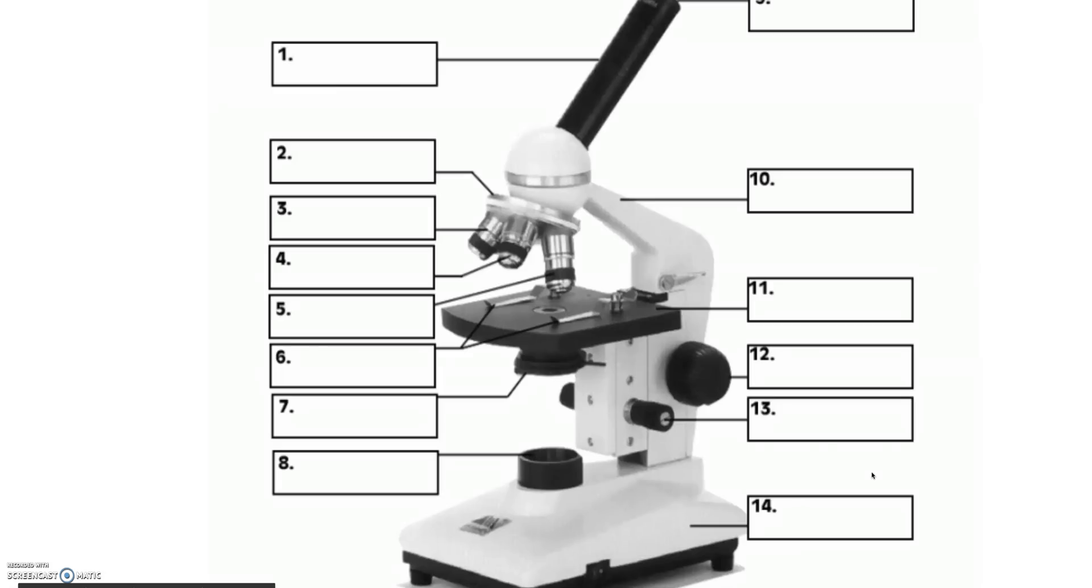This is the base. If you come across a question of how do you properly hold a microscope, you hold the microscope with one hand on arm and another hand under the base. The stage clips are to secure the slide. These are the objective lens. The smallest magnification is usually 4. Middle is 10. Highest is 40.